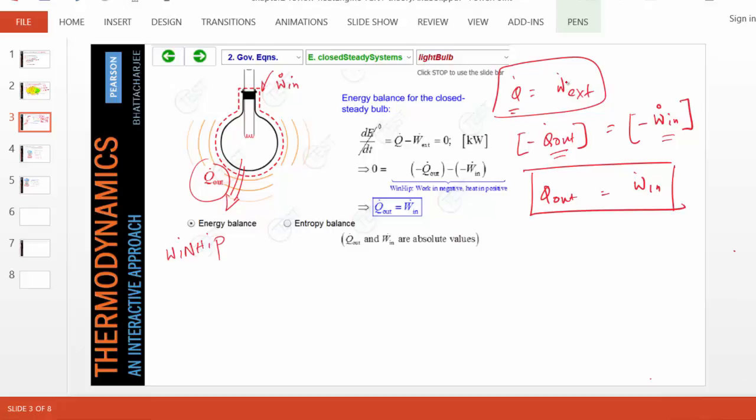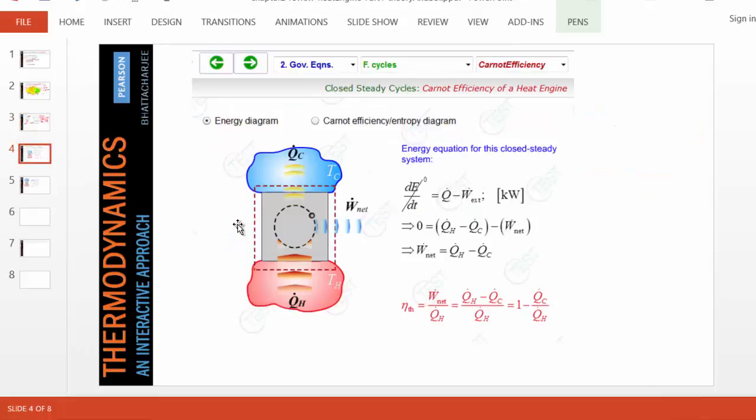Similarly, we could do an analysis of the entropy equation. You can go back to the animation and see how the entropy equation is handled for this bulb. I'll leave it for you. Meanwhile, let's get to the main reason we're reviewing chapter 2 - this is going to feed into a number of chapters later on. We want to discuss heat engines as a special case of closed steady systems.